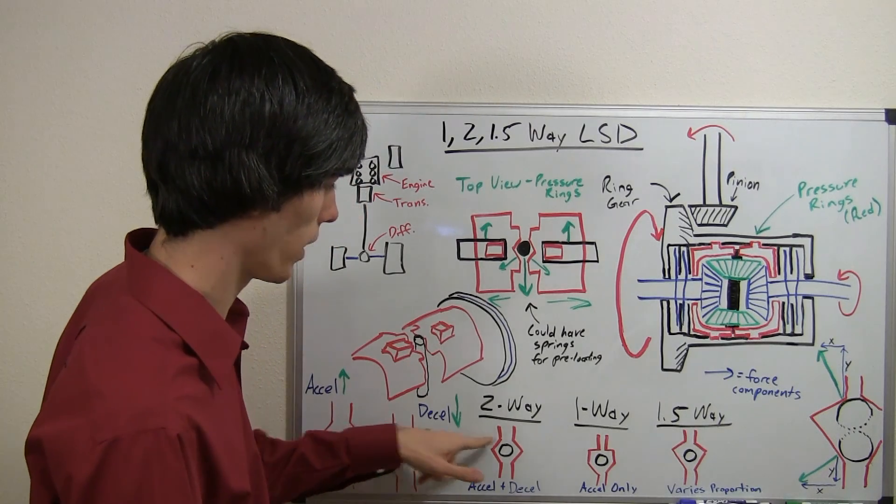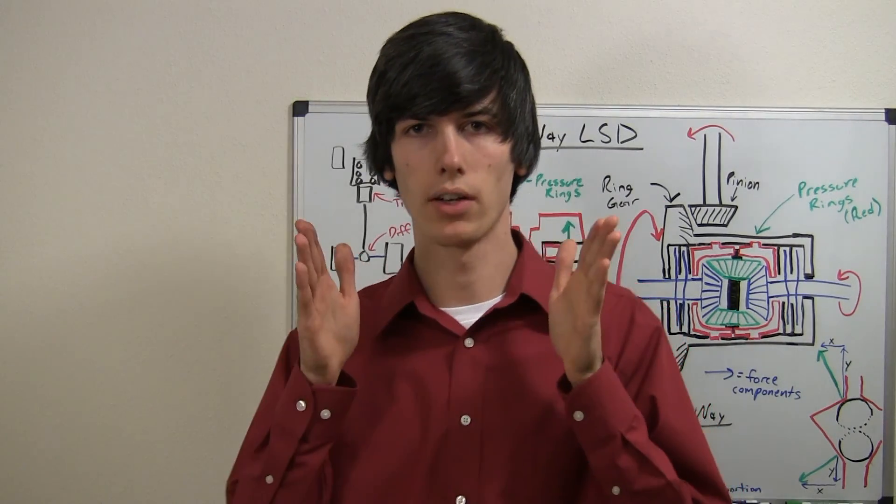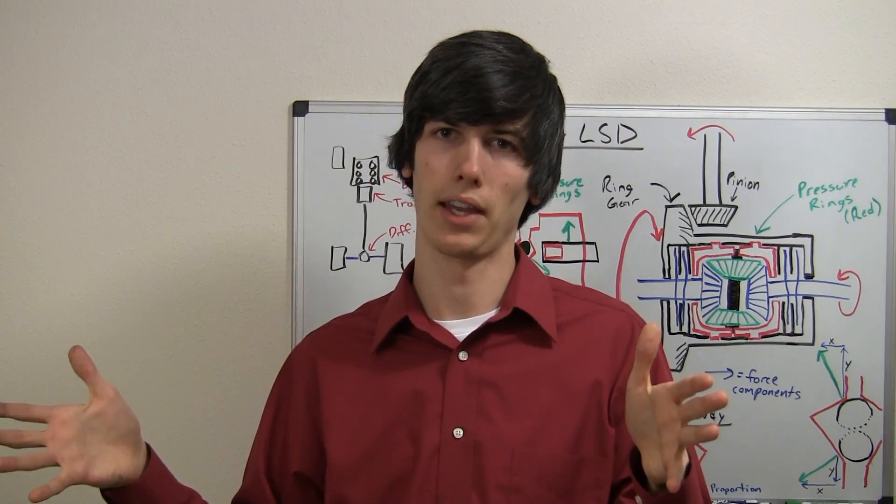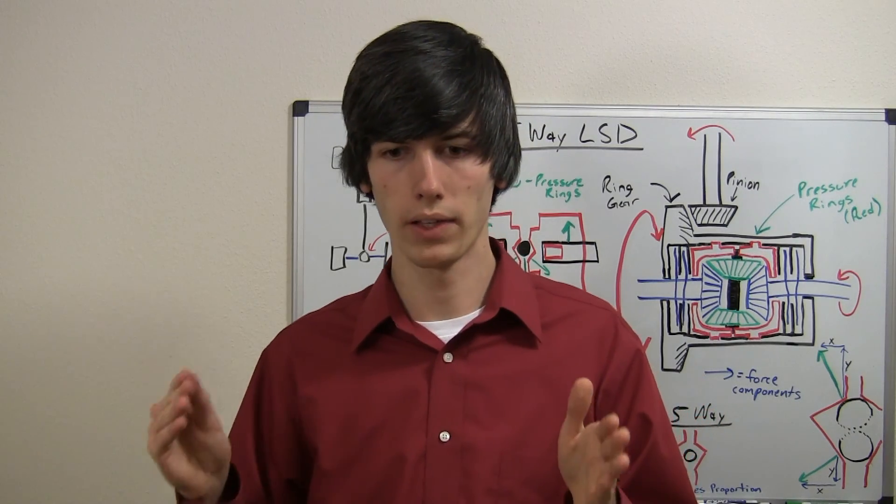What is the advantage of a two-way over a one-way? Well, if you are coming to a stop, and say you're coming to a straight stop, and there is a patch of ice or something like that on one side of your vehicle, well, when you slow down, it's going to lock up this clutch pack.